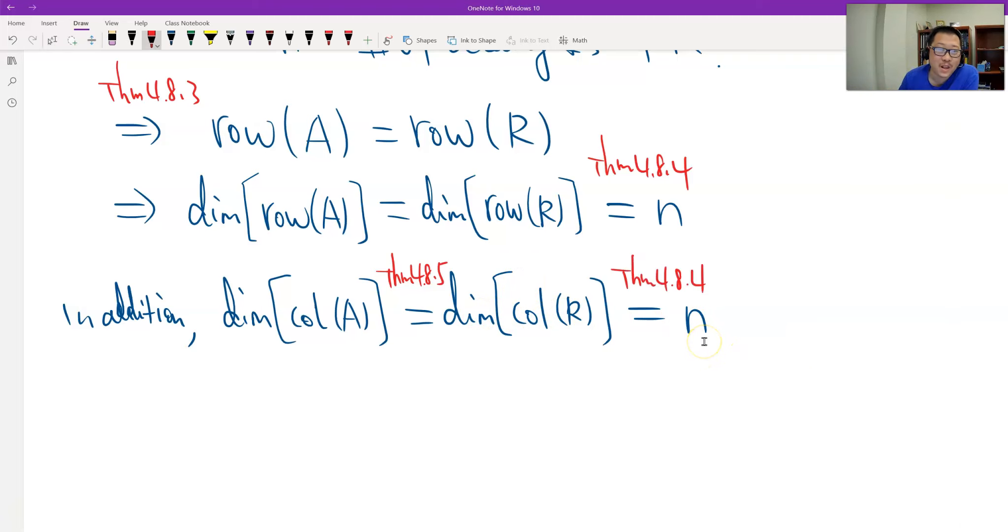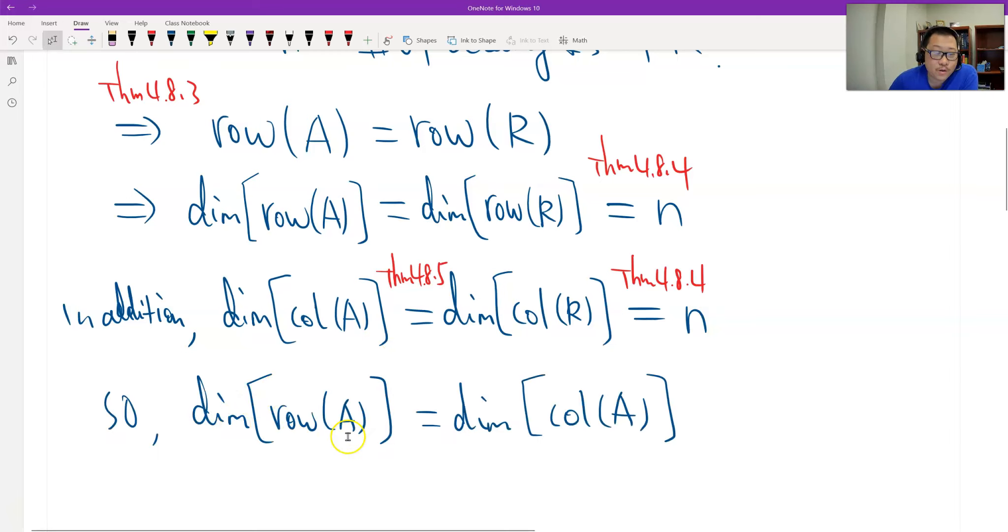And then now we look at: the dimension of the row equals n, the dimension of the column space equals n. Therefore, we have the results. Both dimensions have the same number. Equal dimension. So that's the proof. Thank you.